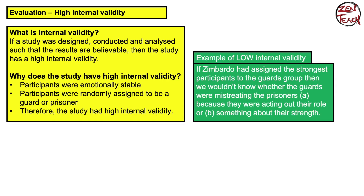Another issue is internal validity, which refers to how close you are to actually measuring what you want to measure. This study is strong because it has high internal validity. All participants were screened with a questionnaire to check whether they are emotionally stable. If the researchers hadn't done that, they might have had emotionally unstable participants — and then if someone behaved very aggressively as a guard or broke down as a prisoner, you wouldn't have known whether it was due to emotional instability or their social role. Because emotional stability was checked, you can say with greater certainty that you were measuring the effect of social role.